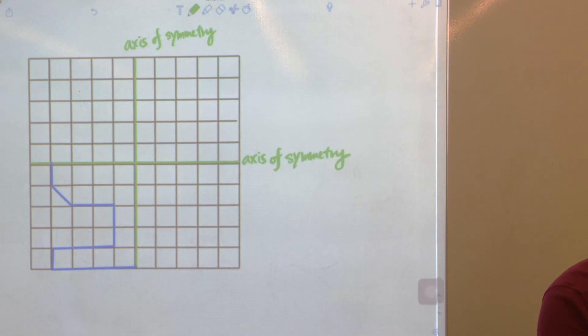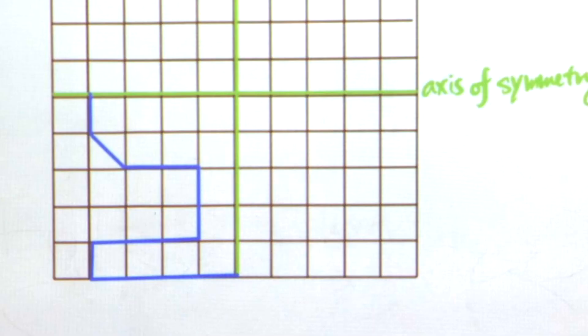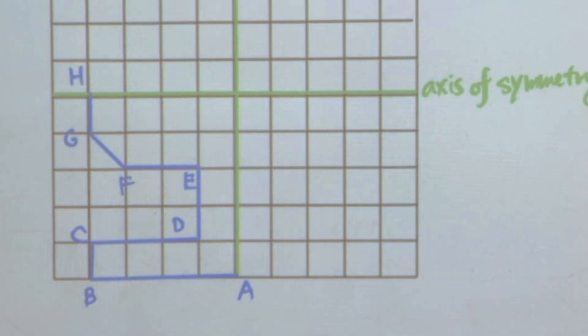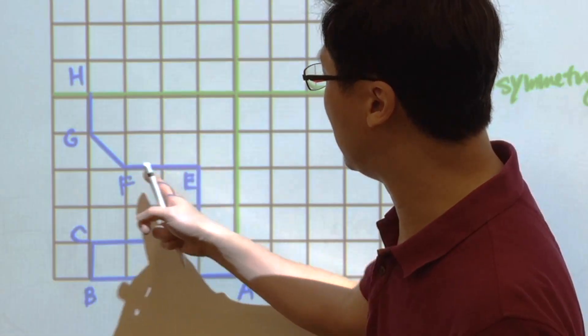So first of all, we label the corners or the vertices of the figure. It will be A, B, C, D, E, F, G, H.